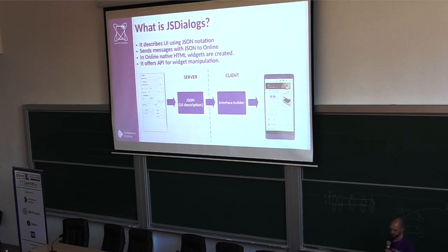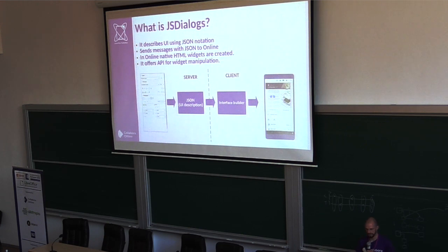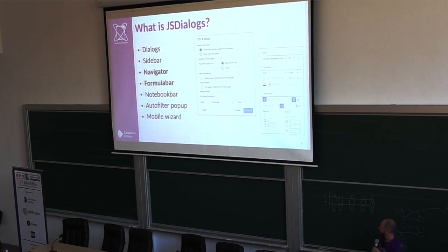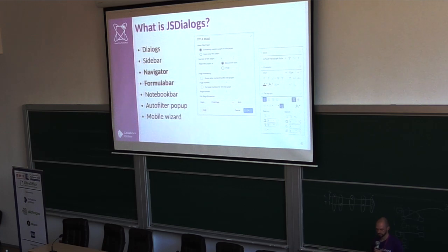We can build different UI variants — for example, on a mobile device we can present the same component differently. Like the sidebar: on mobile devices we show it as a touch device friendly wizard. We use this for different components: dialogs, sidebar, notebook bar, and different pop-ups or drop-downs in Calc.